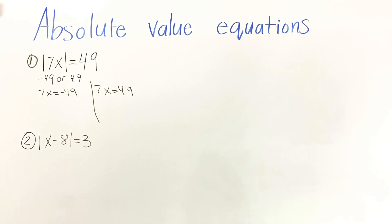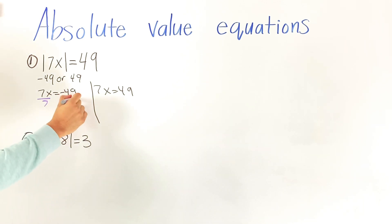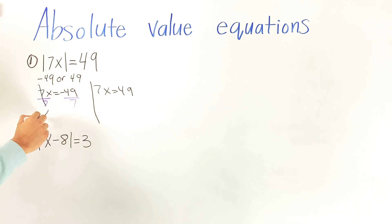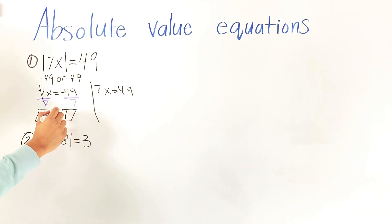This becomes a one-step equation. Since 7 is multiplying x, the opposite is division, so we divide by 7 on both sides to leave x by itself. 7 goes into 49 seven times, but positive times a negative gives a negative, so x equals negative 7 for the first equation.